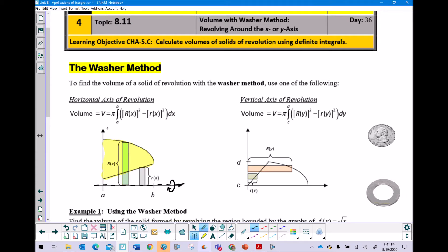And if you look at this washer method setup, it has a lot of very similar characteristics to it as the disk method does. In fact, if I could just temporarily scribble this part away, that is your disk method, but the washer method has this extra component of subtracting this other radius.